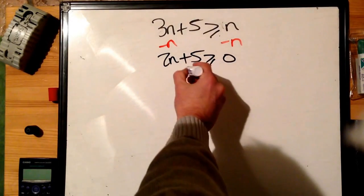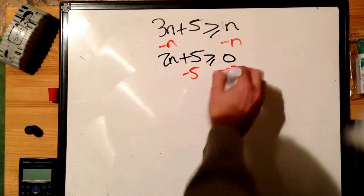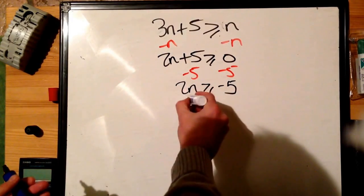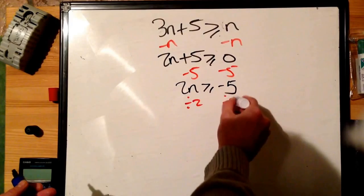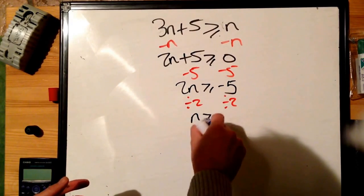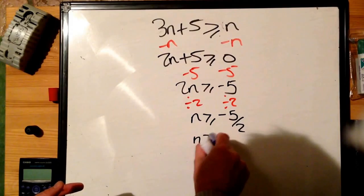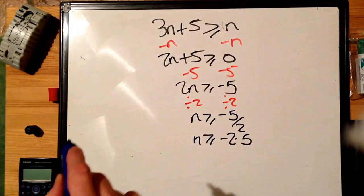Next, remove the 5 by subtracting 5 from both sides. 2n is bigger than or equal to minus 5. Then finally divide by 2 on both sides to give us n is bigger than or equal to minus 5 over 2. You could do that as a decimal if you want: minus 2.5.